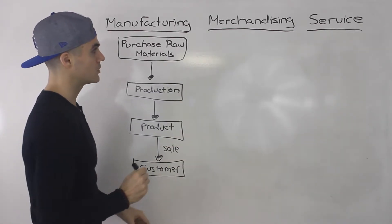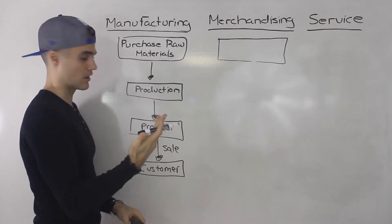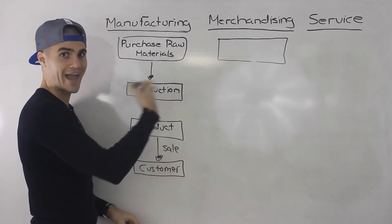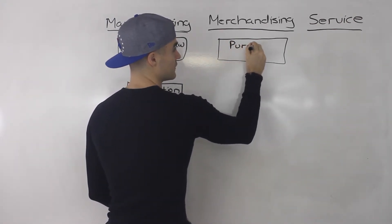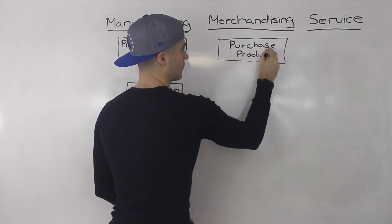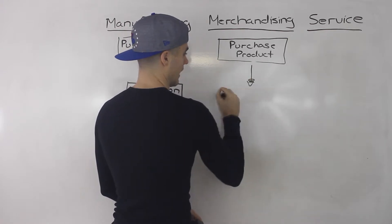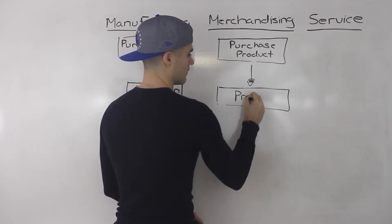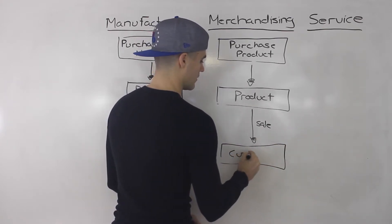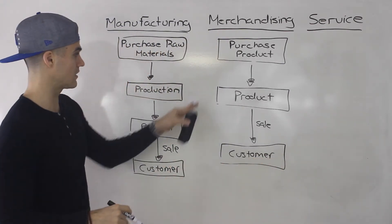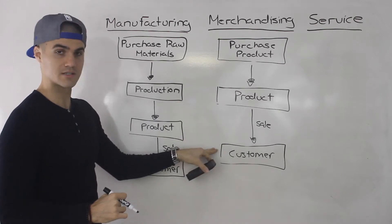What about a merchandising company? A merchandising company is not making the product — they're actually just buying the finished product outright. So the customer of a manufacturing company can also be a merchandising company, because what merchandising companies do is purchase the finished product and it goes right on their shelves. They skip the production step entirely. They purchase the product, have the product, sell it to the customer, and the customer ends up with the product.